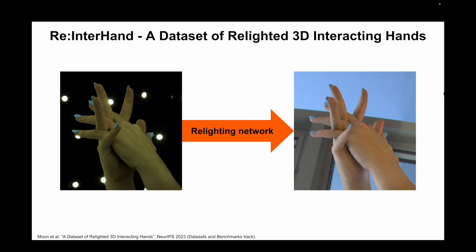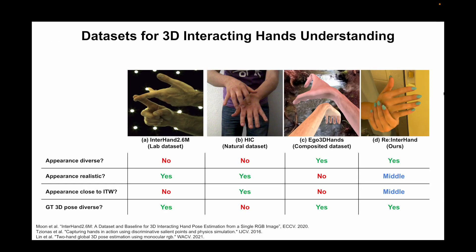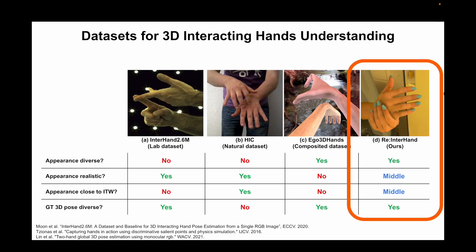We enhance the appearance diversity using a state-of-the-art relighting network. Our new Re-InterHand dataset can be a complementary dataset as it provides diverse appearances of images with accurate and diverse 3D ground truth, while images have mid-level realism due to the image synthesis process.